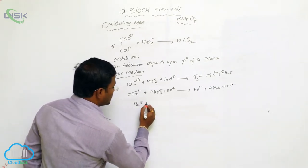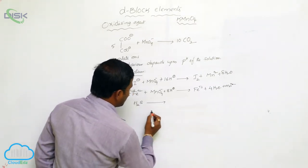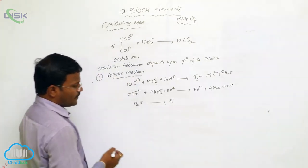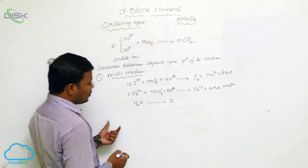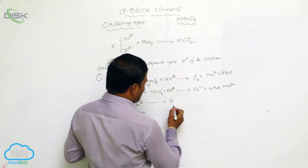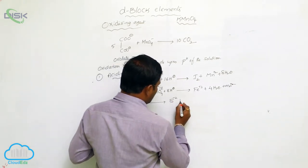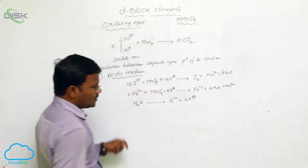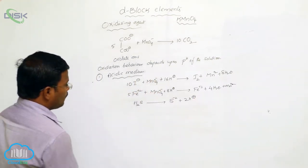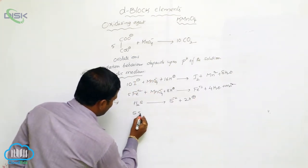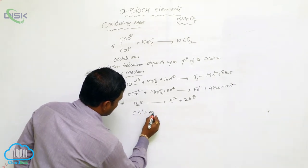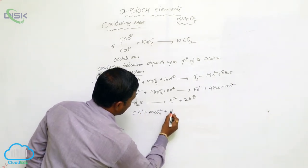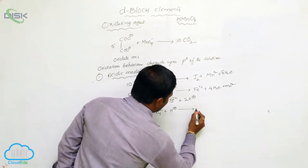Permanganate ions are also useful to oxidize hydrogen sulfide into sulfur. Hydrogen sulfide dissociates to produce S²⁻ plus 2H⁺. The formed sulfide ions — 5S²⁻ reacts with permanganate ions in the presence of H⁺ to convert into sulfur.